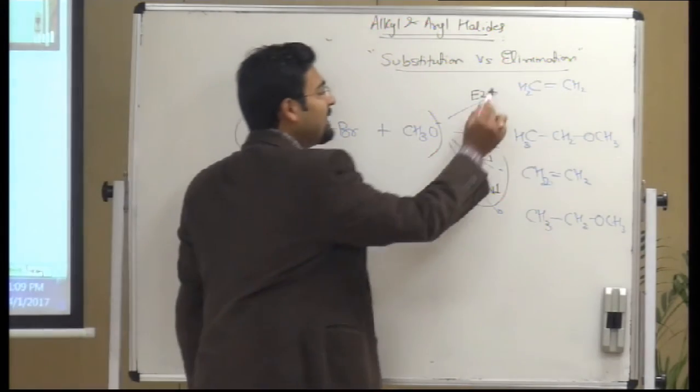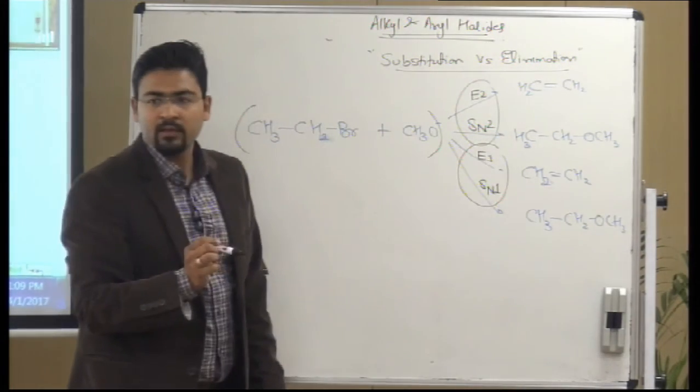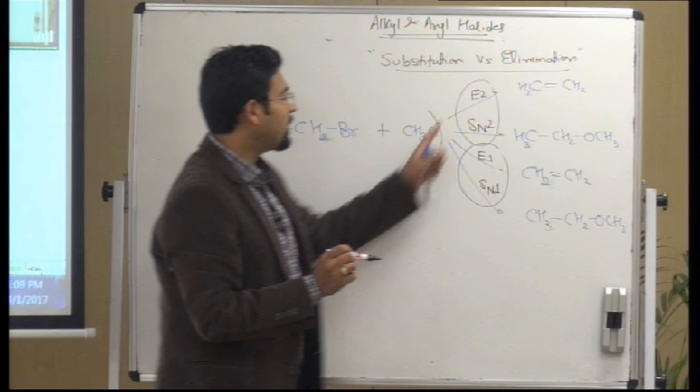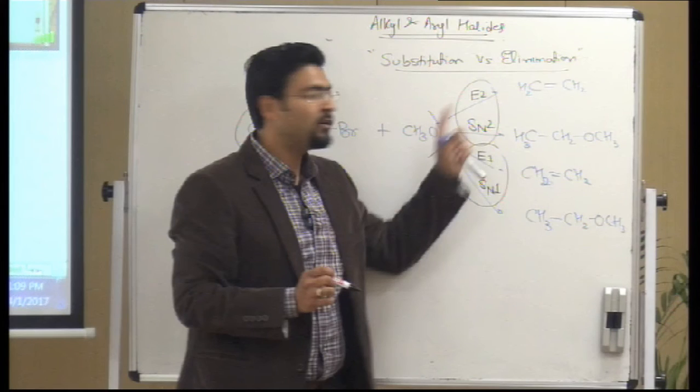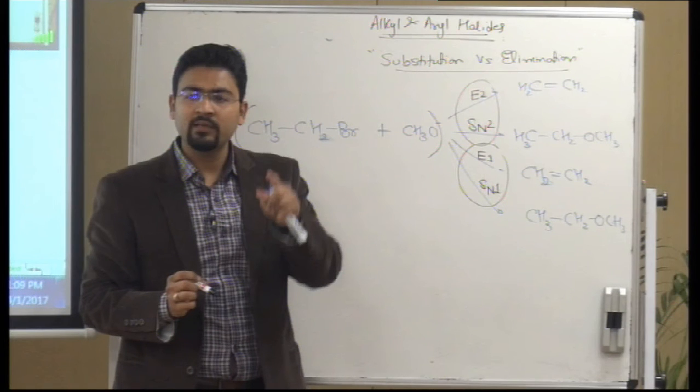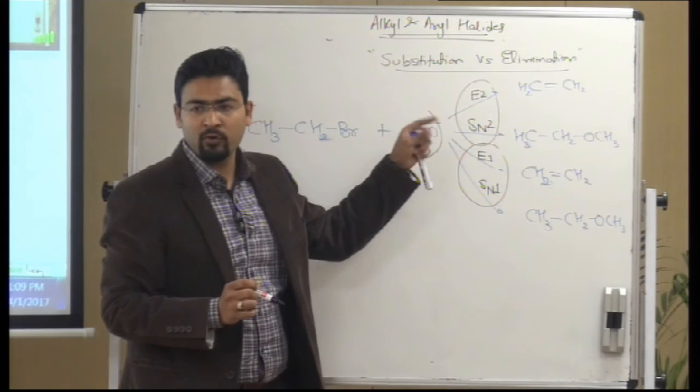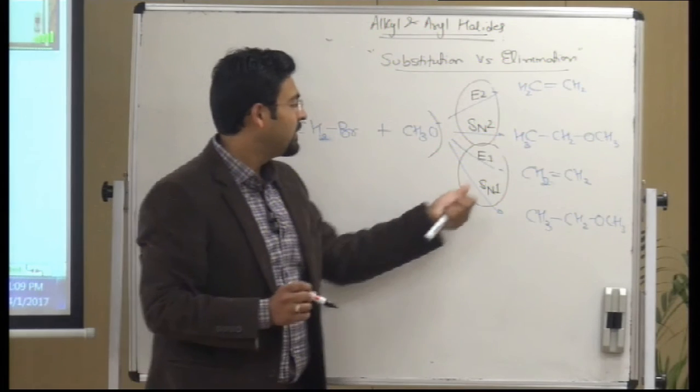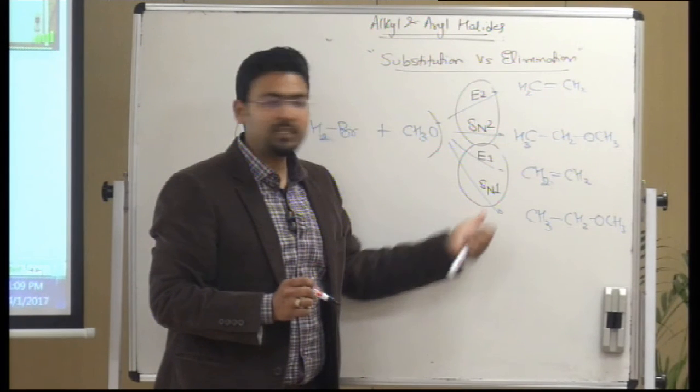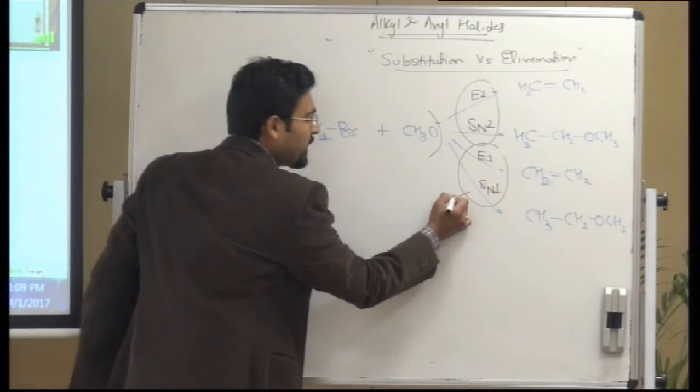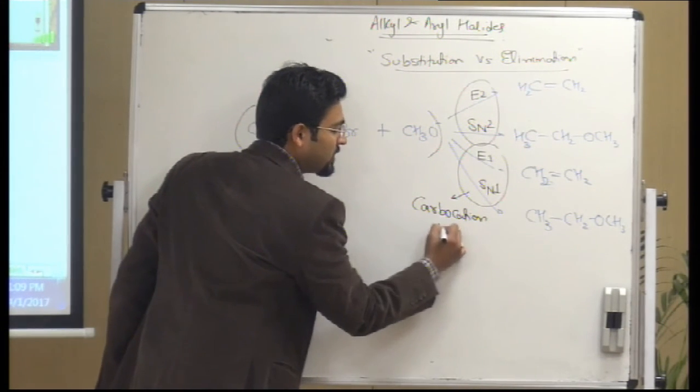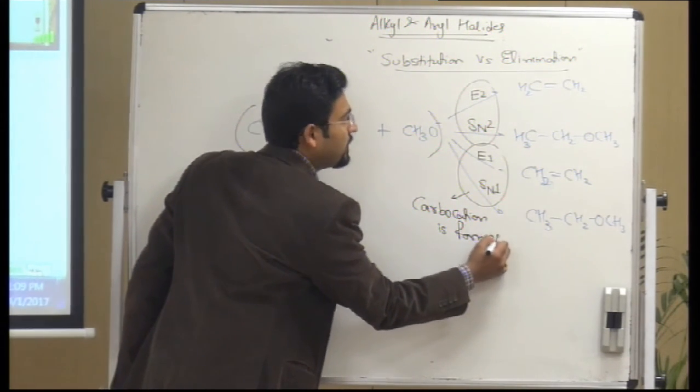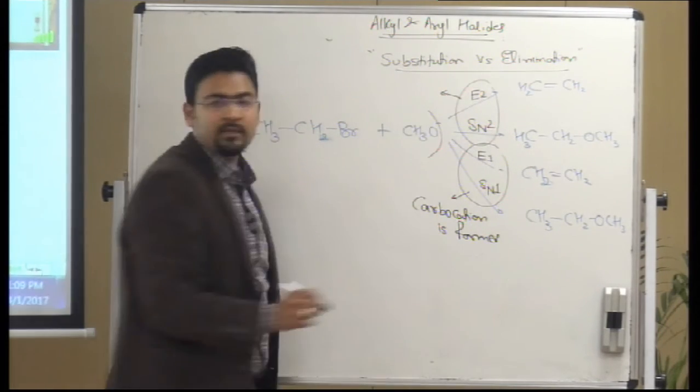But good part is that there is a similarity in E1 and SN1. And there is a similarity in E2 and SN2. SN2, what happens? Bimolecular, it is a single step reaction. Okay, E2, what happens? Bimolecular, it is a single step reaction. In the same step, base abstracts the hydrogen. In the same step, leaving group leaves and double bond forms. Even in SN1, in both cases, carbocation forms. So, these are the two cases where carbocation is formed, whereas in the other case, carbocation is not formed.